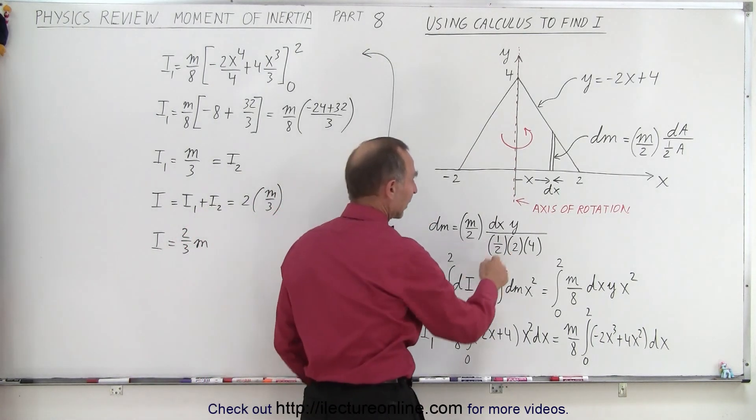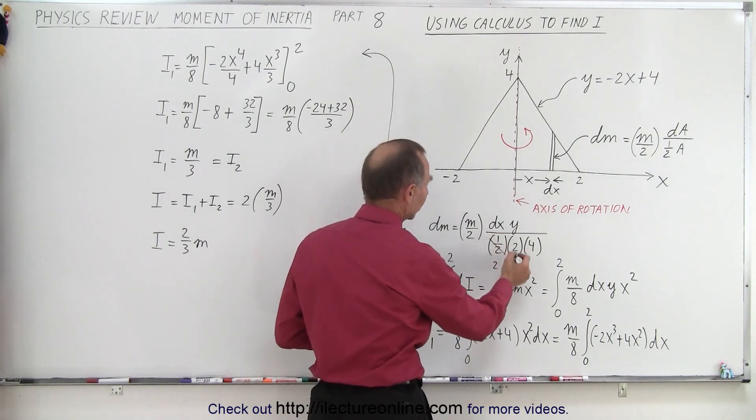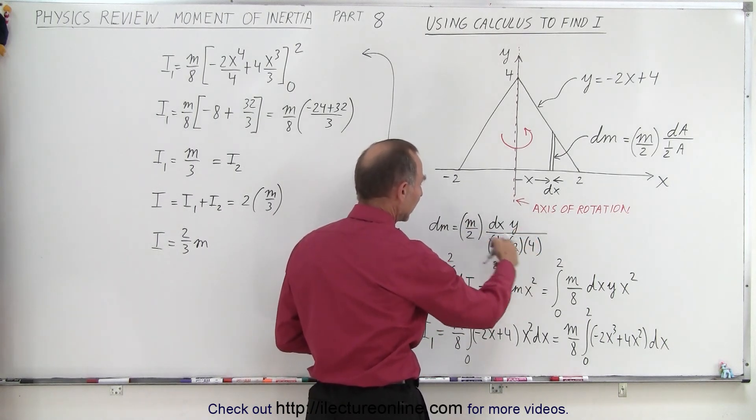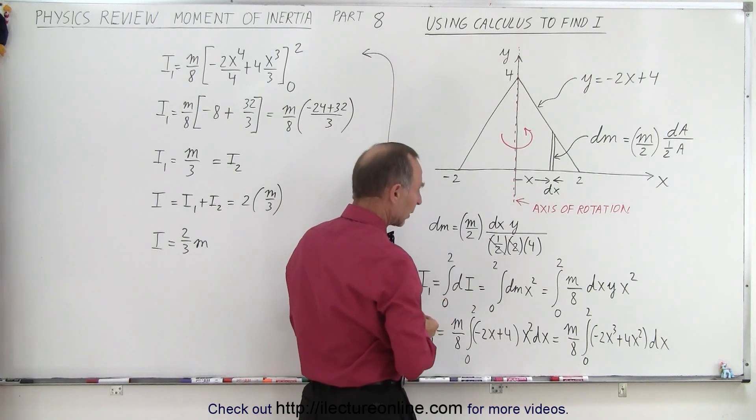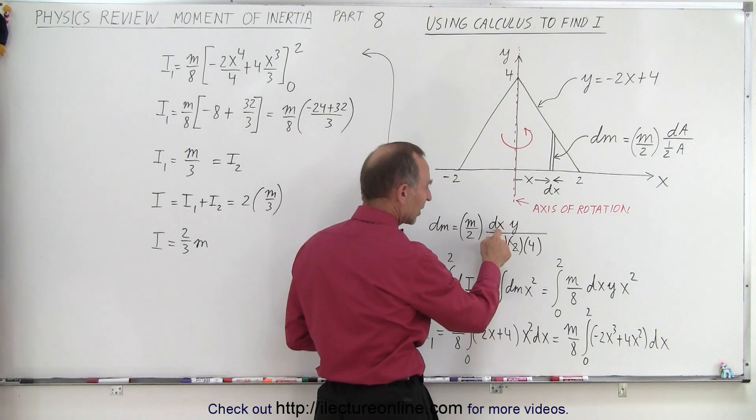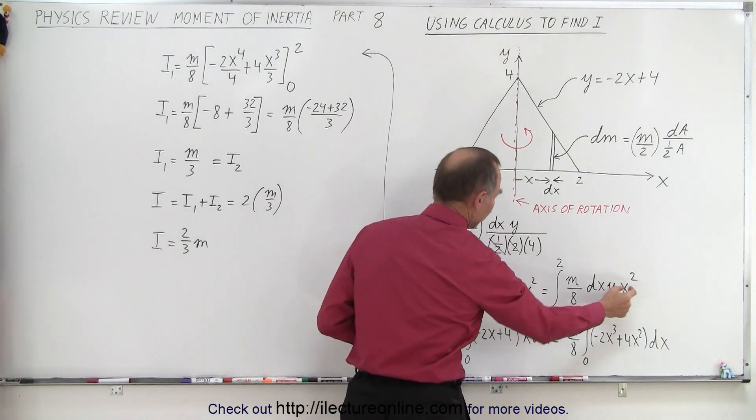So notice that this half cancels out, that's 2, so these cancel out. We're left with 1 over 8 times m, which is m over 8, which can come outside the integral sign. Then we're left with y times dx, times x squared.